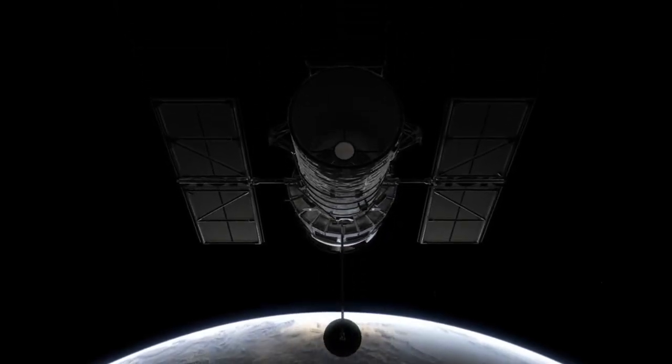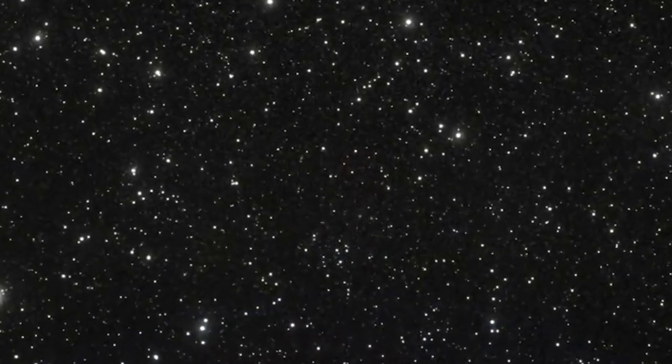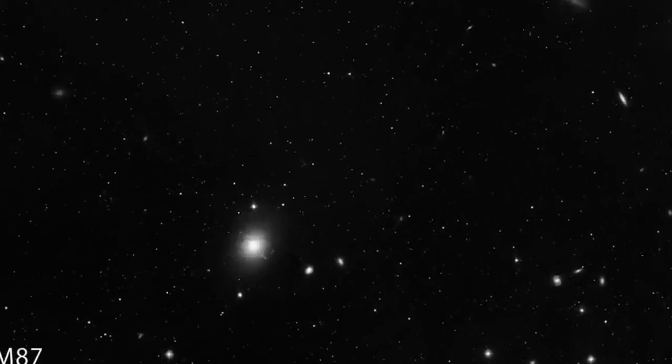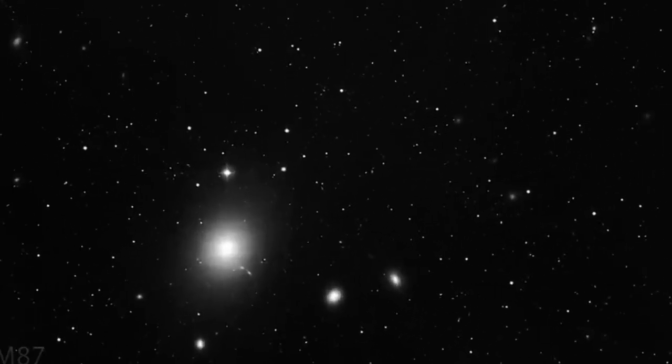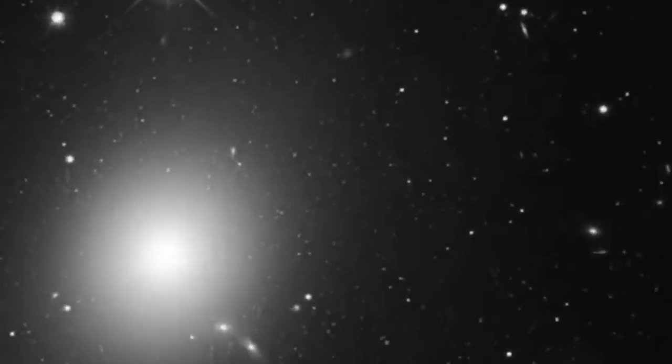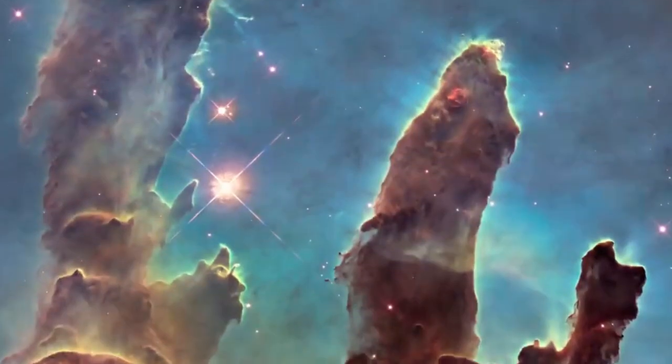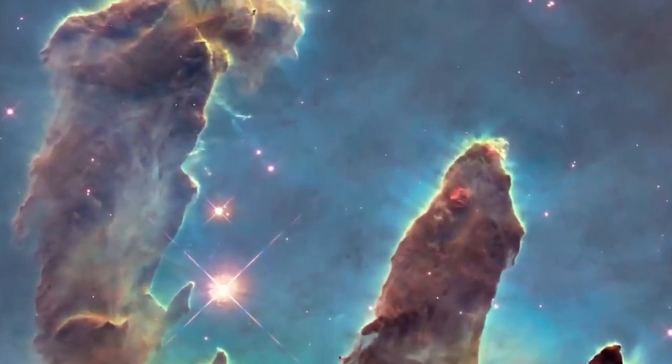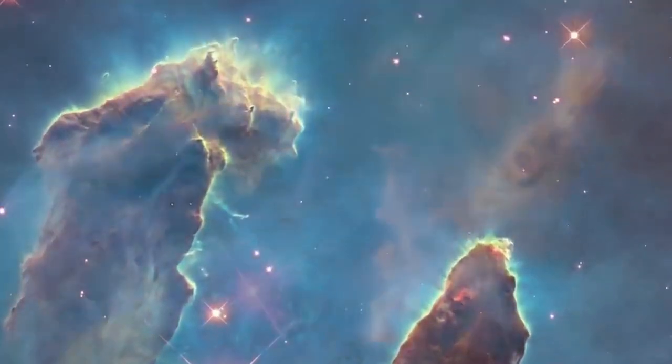The image of the black hole is not just a blurry orange ring—it's a gold mine of information. The bright ring we see is the accretion disk: hot, glowing gas circling at tremendous speeds around the black hole. The dark center, known as the shadow, is actually the event horizon, the point of no return. Anything that crosses this boundary is consumed by the black hole, never to escape. The size and shape of the shadow provide critical clues about the black hole's mass and spin.